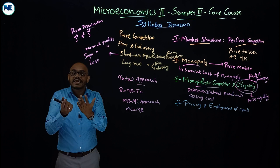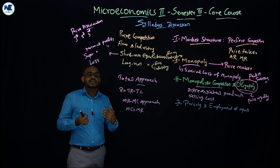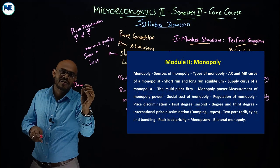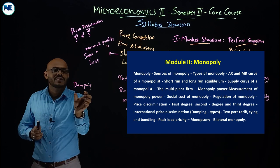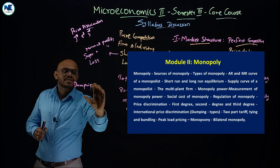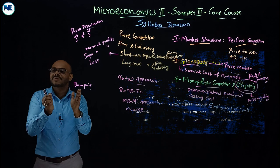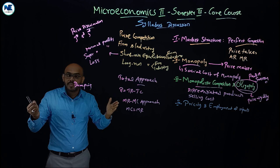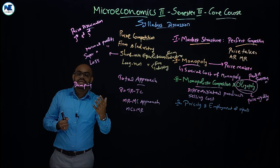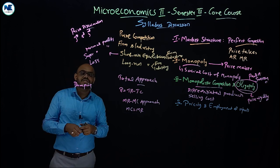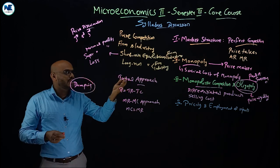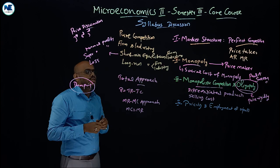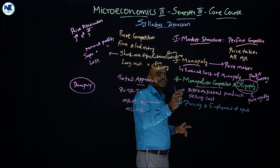Other areas include Cournot equilibrium, price leadership, and cartel. Under monopoly, an important topic in international trade is price discrimination — specifically dumping. We focus on the types of dumping: predatory dumping, persistent dumping, and sporadic dumping. Dumping is charging different prices in different markets for the same product — selling in a foreign market at a lower price than the domestic market.